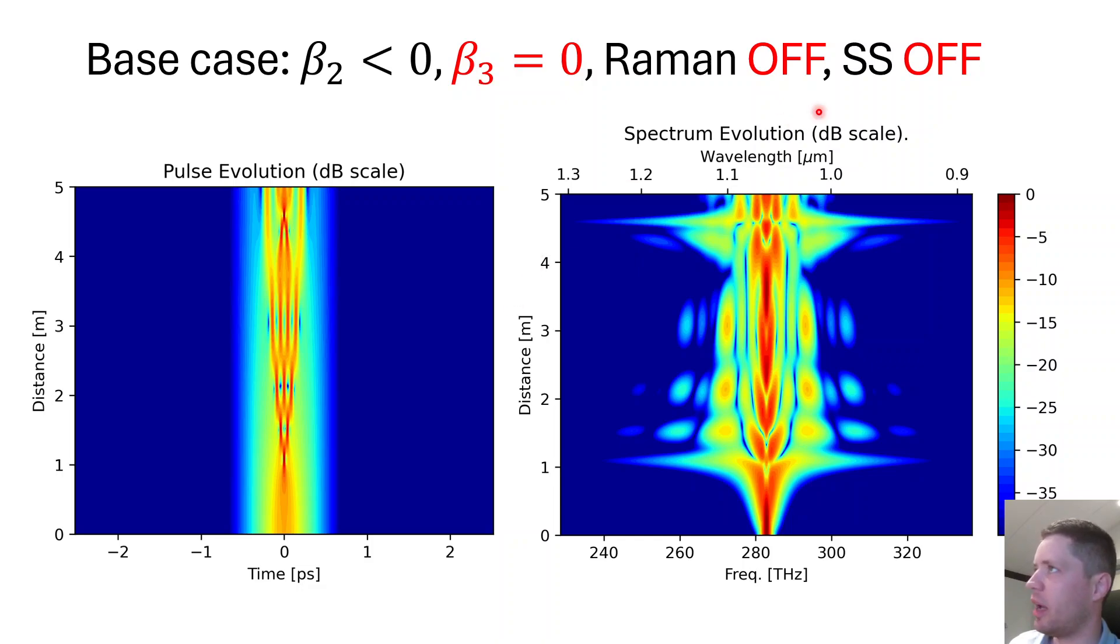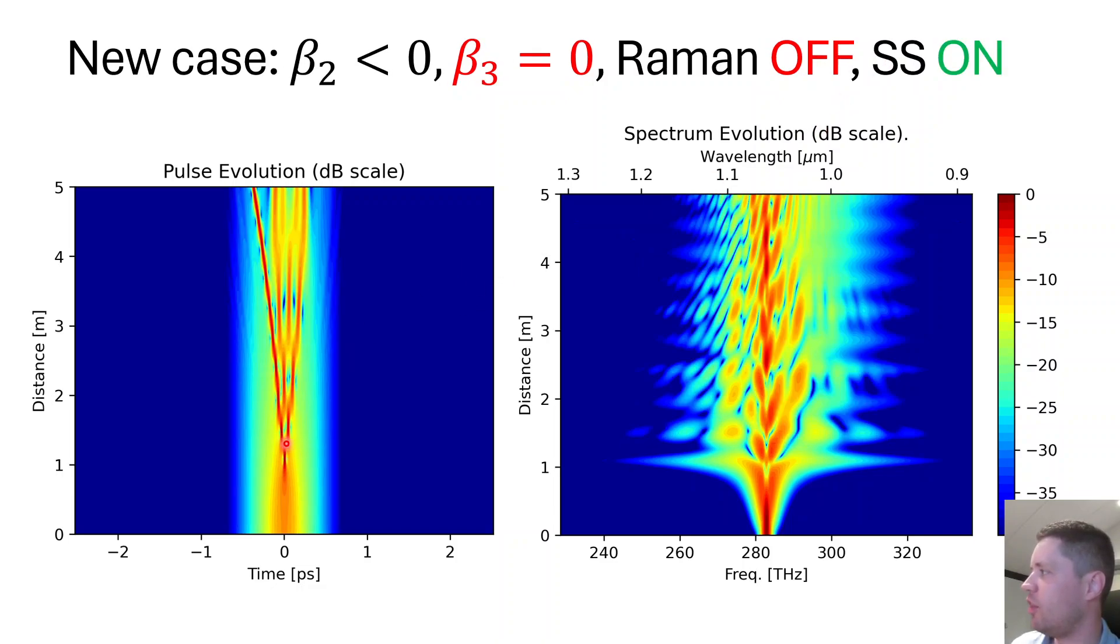Next we can take a look at the case where self-steepening is relevant. If we activate this we can see that we actually get soliton fission again, but now the walk-off happens in the forward direction. So this part of the pulse will actually arrive slightly earlier than the main part.